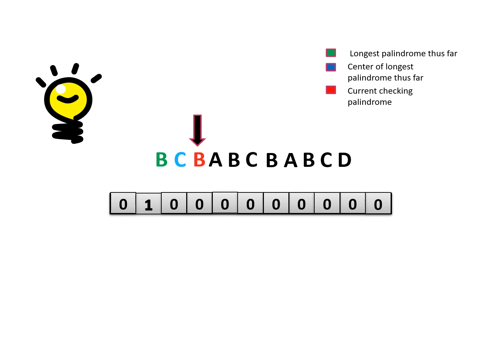Moving to the next character B as center, we can't expand because both left and right characters are different, so the longest palindrome has not changed. Moving to the next character, we expand since they are the same, then expand again, and expand once further — three times total. The value in the array is updated to 3, and this is the new longest palindrome seen thus far.